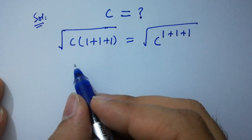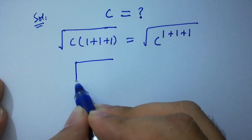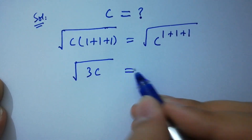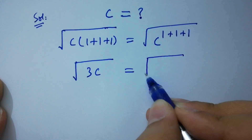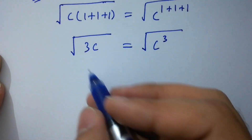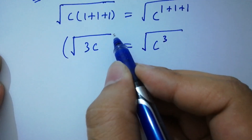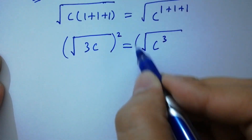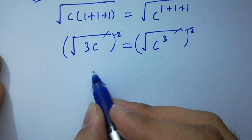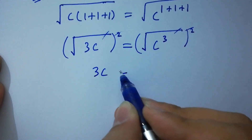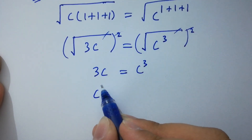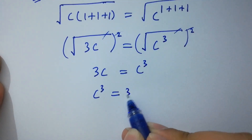On the left hand side we have square root of 3c, equal to square root of c to the power 3. To solve this, take square on both sides. The square cancels from the square root. We have 3c equal to c cubed, which is the same as c cubed equal to 3c.